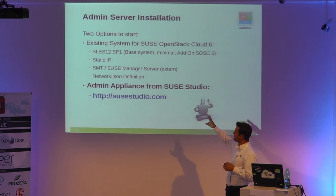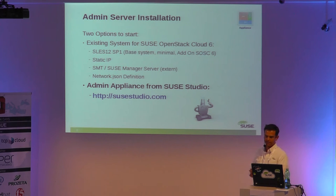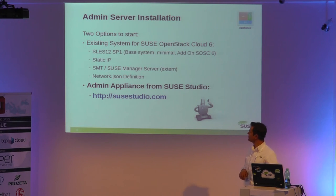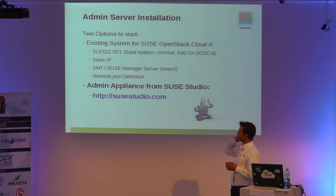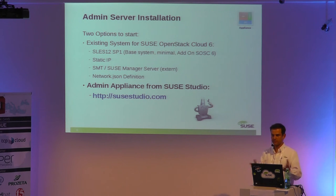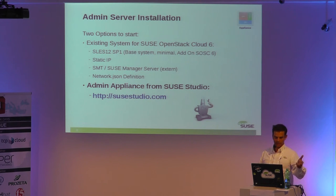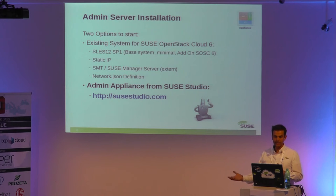I used the admin appliance that you can download yourself from SUSEstudio.com. Currently version 5 is there, which is the Kilo version. The Liberty version — cloud 6, SUSE OpenStack Cloud 6 — is on my machine. When you download it, you create a little instance, do some EULA acceptance, and take care of the network JSON setup. Then when Martin pressed the timer I started to install Crowbar, and the next step is to deploy the services on these nodes.